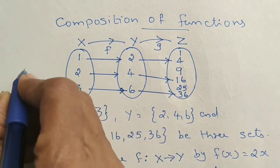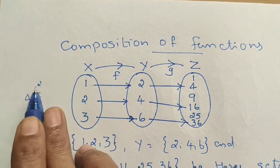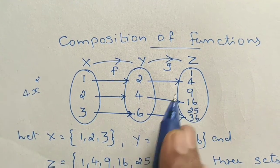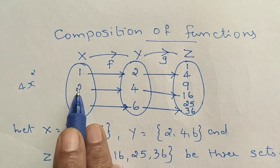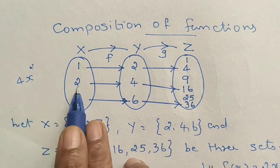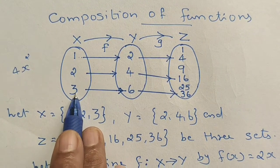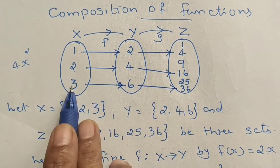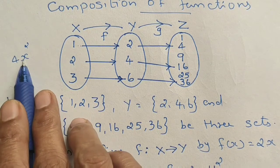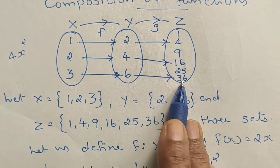If x equals 1, then h of 1 is equal to 1, and 1 squared is equal to 1. Let's use x equals 2: 2 squared is equal to 4. For x equals 3: 3 squared is 9, and 9 times 4 is 36. So h of 3 equals 36.